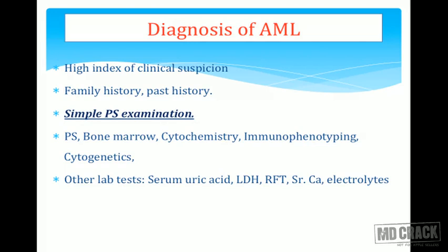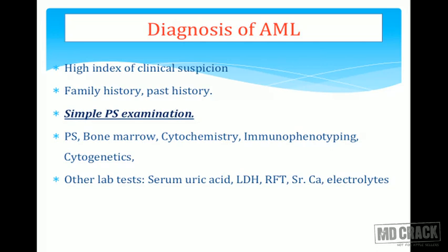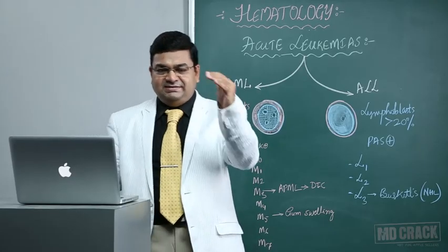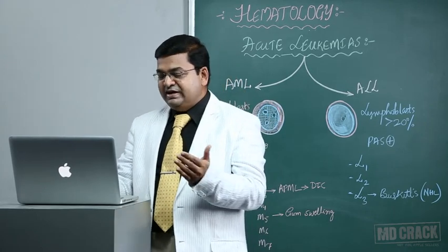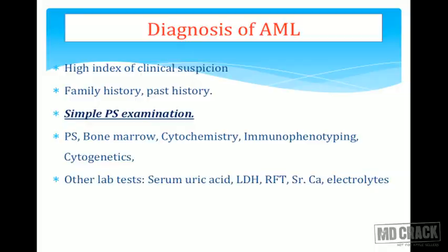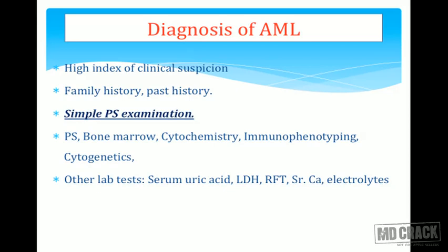Other useful laboratory tests include serum uric acid — elevated due to high cell turnover rate in leukemias, sometimes leading to urinary tract stones. LDH levels will also be raised. Renal function tests, serum calcium, and electrolytes should also be estimated.